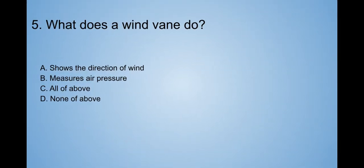Five. What does a wind vane do? A. Shows the direction of wind. Oh, wind. Ha, I said it wrong. B. Measures air pressure. C. All of above. D. None of above. Huh, I've seen a wind vane before. But, what does it do? Let's go for the answer.